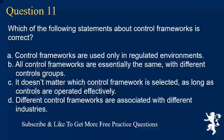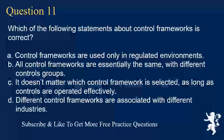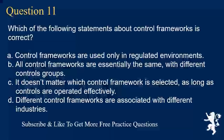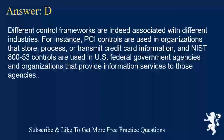Question 11. Which of the following statements about control frameworks is correct? A. Control frameworks are used only in regulated environments. B. All control frameworks are essentially the same, with different control groups. C. It doesn't matter which control framework is selected, as long as controls are operated effectively. D. Different control frameworks are associated with different industries. Answer D. Different control frameworks are indeed associated with different industries. For instance, PCI controls are used in organizations that store, process, or transmit credit card information, and NIST 800-53 controls are used in U.S. federal government agencies and organizations that provide information services to those agencies.